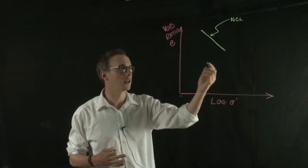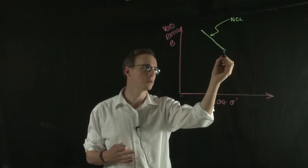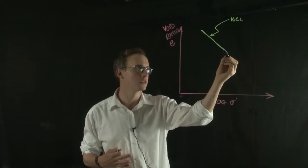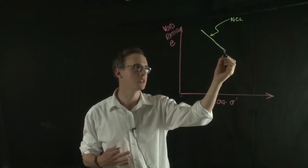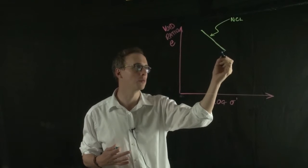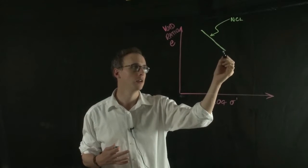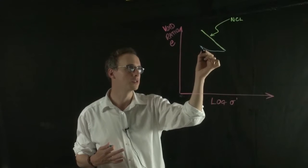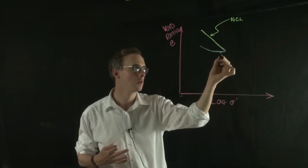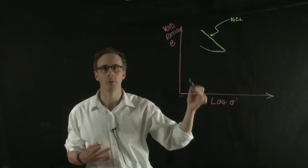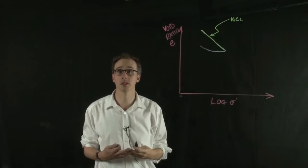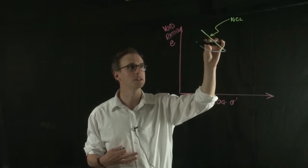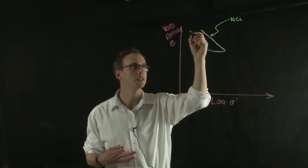What that would actually look like would be something like this, where we remove the load increment — so we're in this position and we remove the load increment, so we travel backwards on the x-axis. The soil would go through something like this, where there's some rebound, so it's not a fully plastic material, but it's not fully elastic, so there's some sort of permanent deformation.